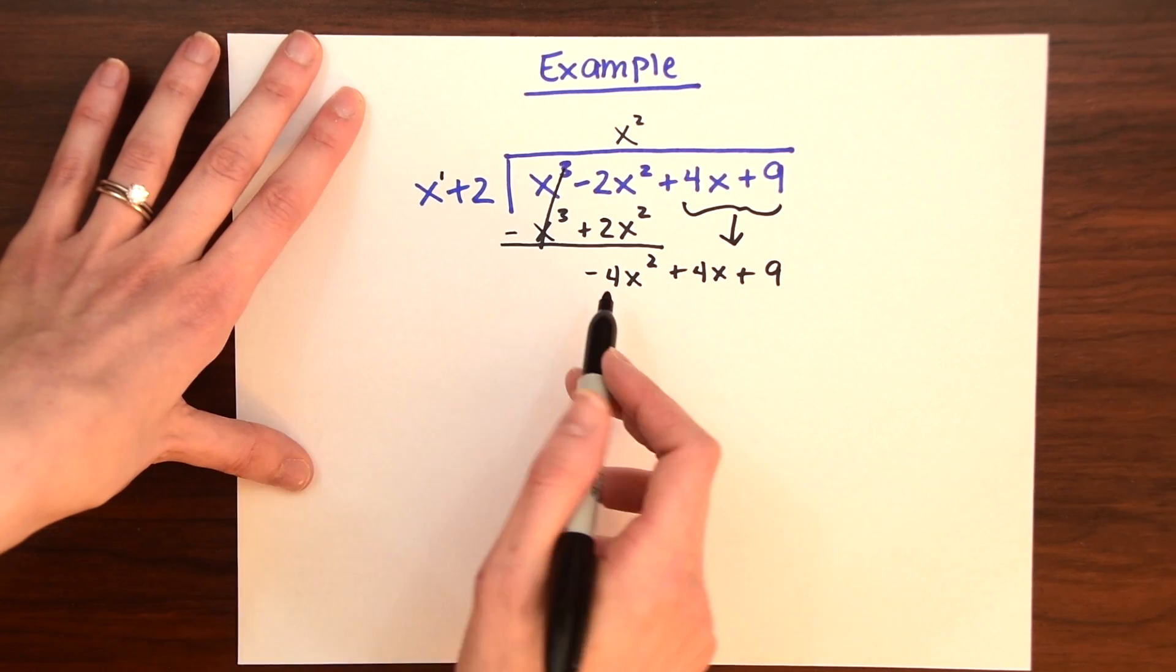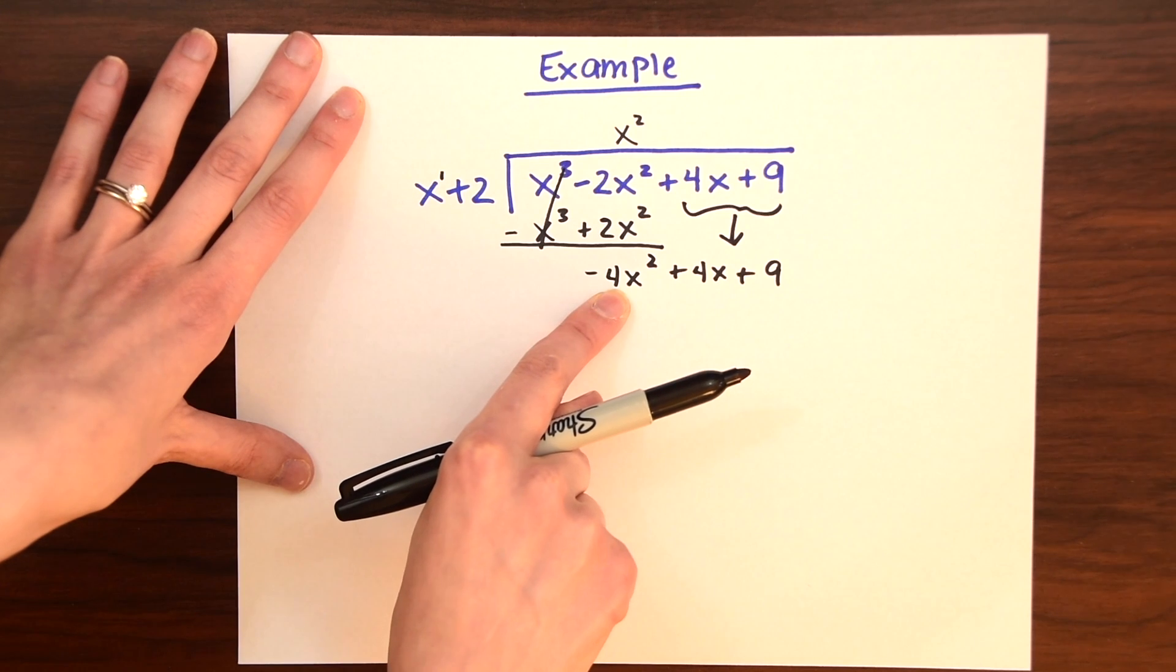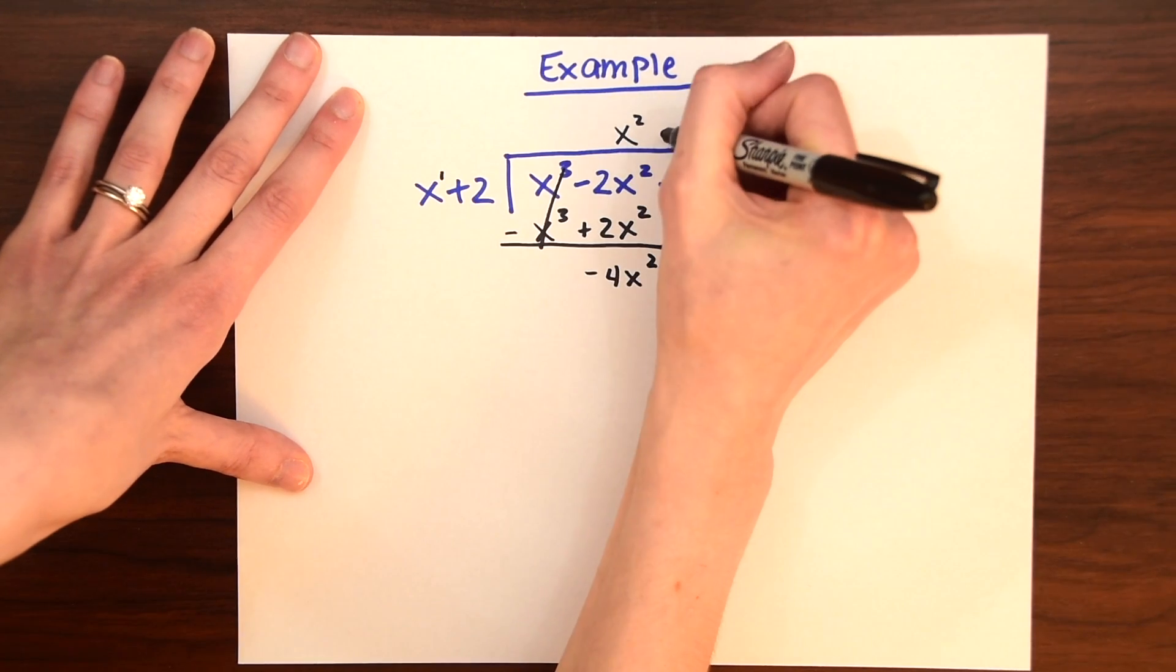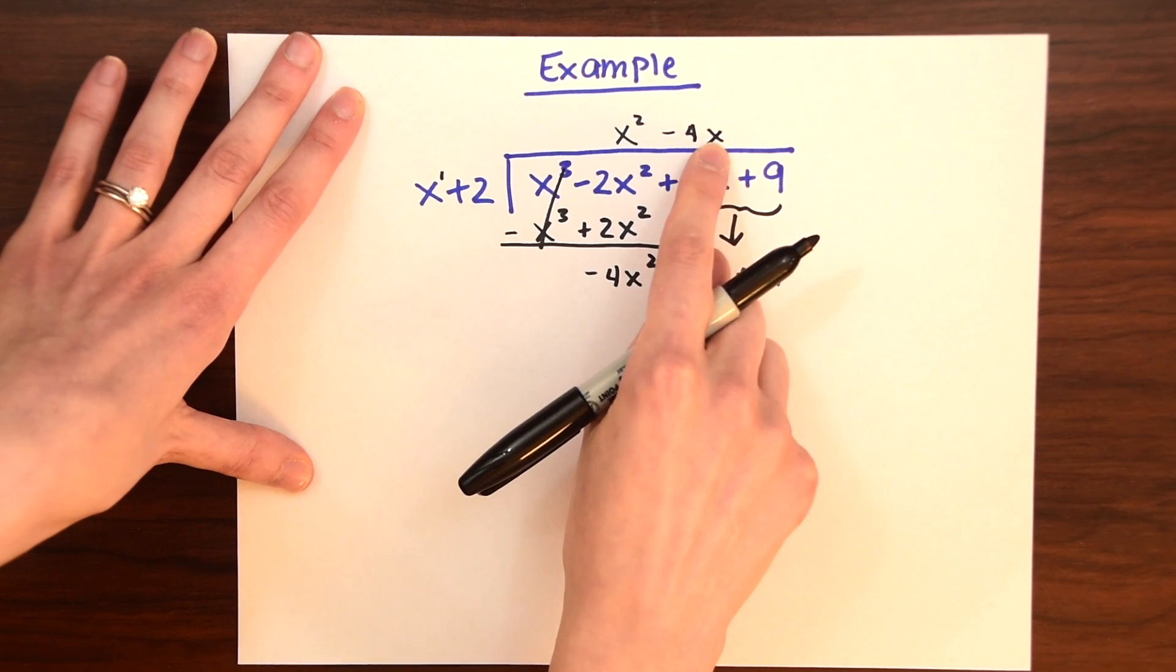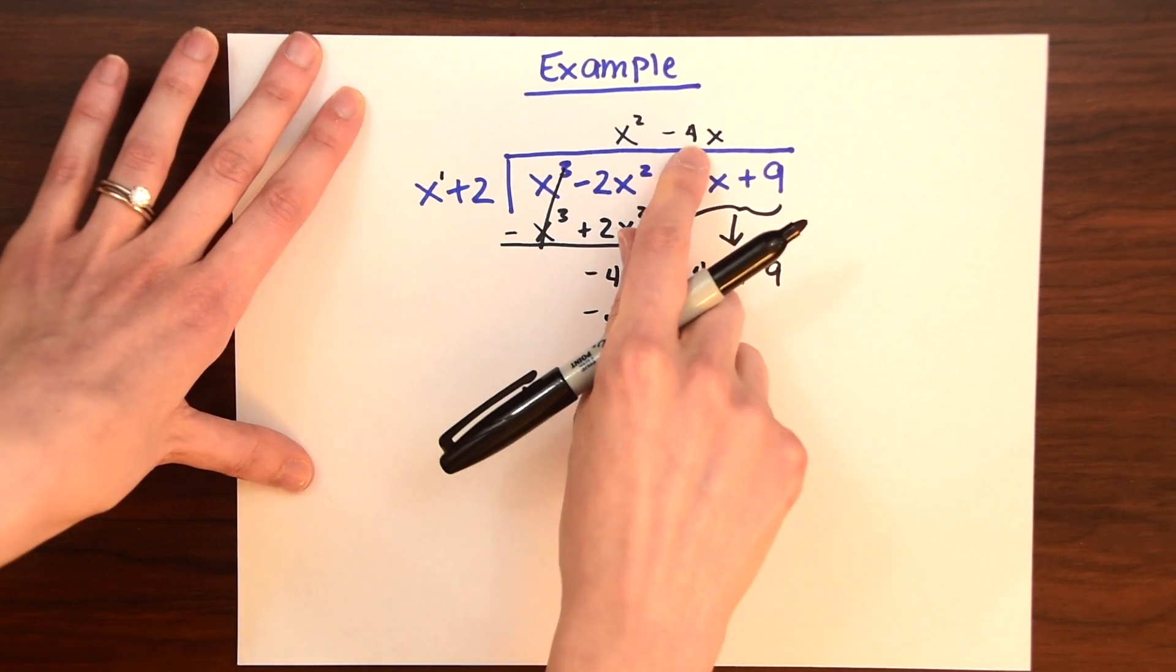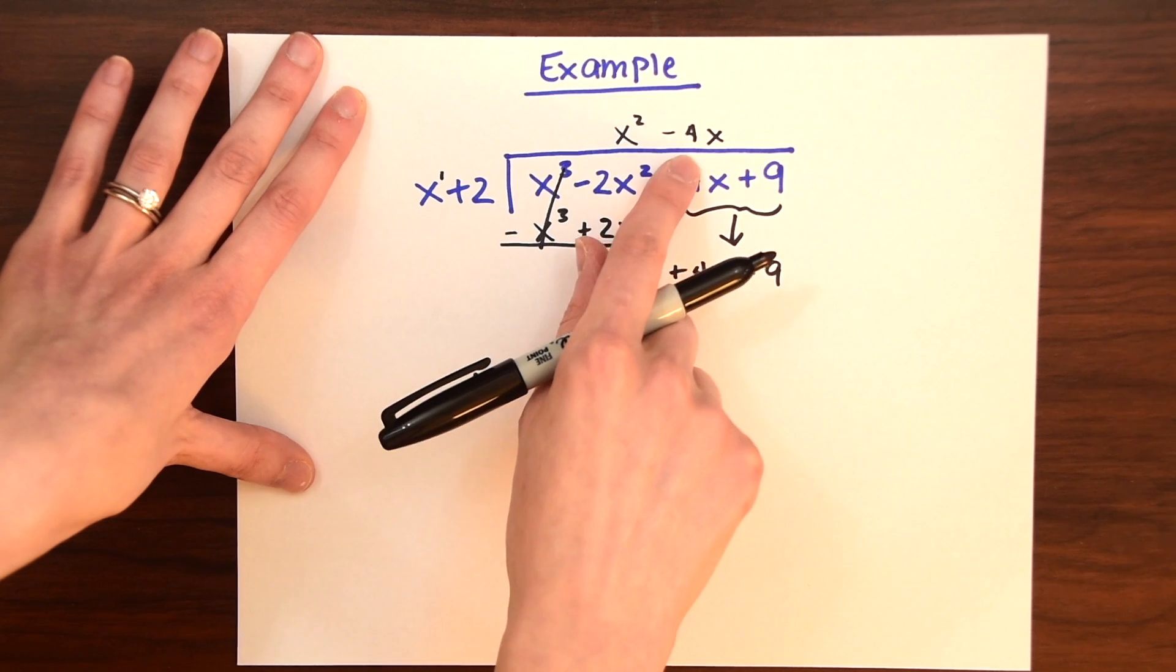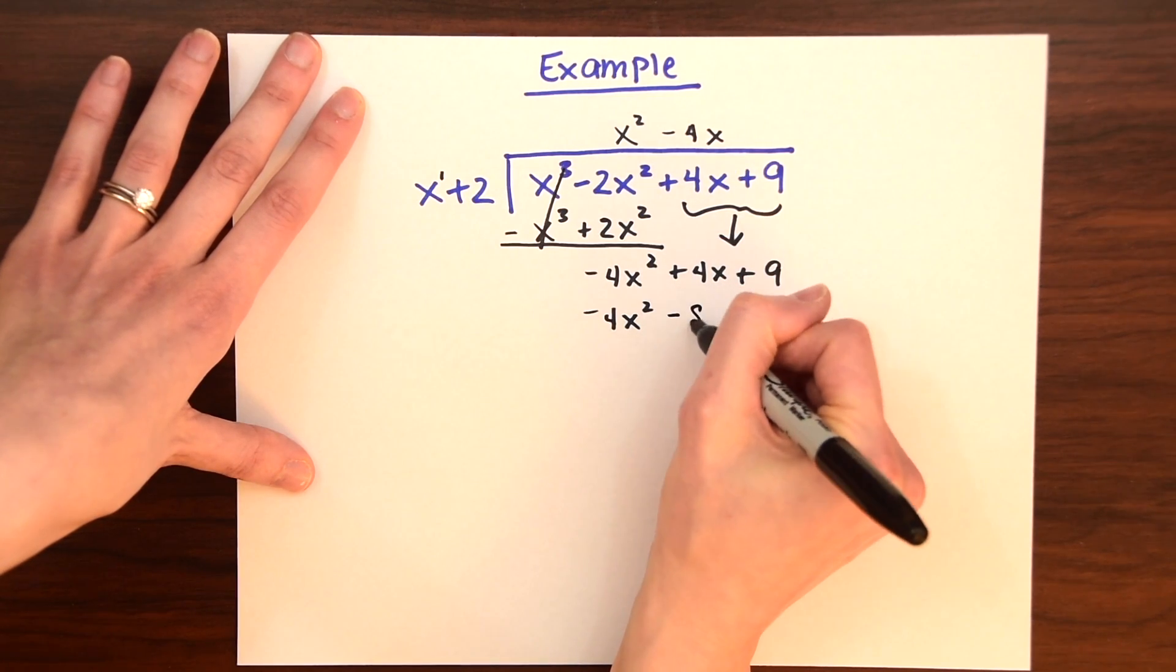And now, up next, we want to ask ourselves, what can we multiply times x to get minus 4x squared? So that would be minus 4x. So minus 4x times x gives us minus 4x squared. And then now we want to do the same thing to the next term, minus 4x times 2, which gives us minus 8x.